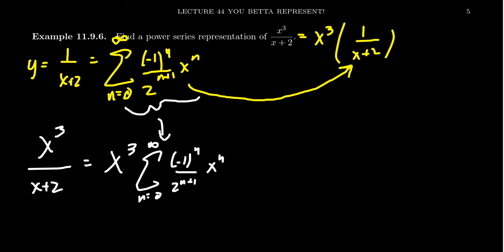And so then by the distributive property, if we distribute this x³ through, that'll just add 3 to the exponent of n. We take the sum where n equals 0 to infinity, it'll still be alternating (-1)^n / 2^(n+1), and then we get x^(n+3).